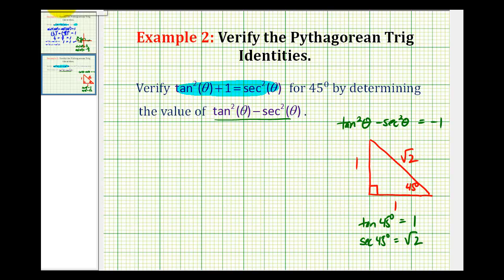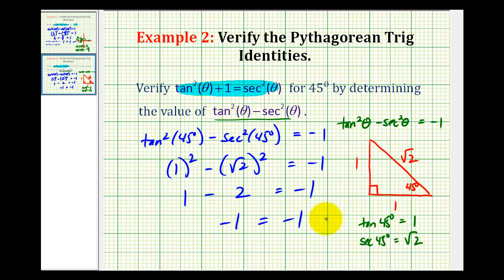So now for our verification, we're going to have tan²(45°) - sec²(45°). We want to verify that it equals -1. Tan(45°) would be 1, so here we'd have 1² - sec²(45°) would be (√2)². This would be 1 - 2, and we have our verification: -1 = -1.